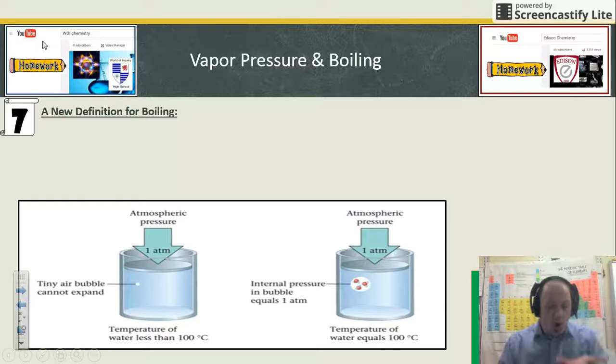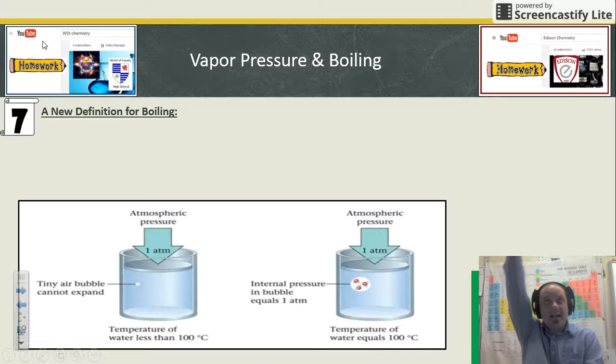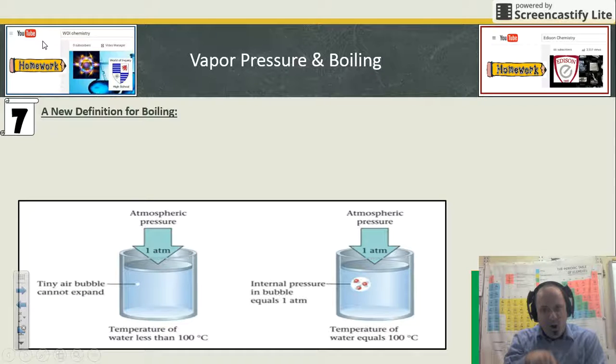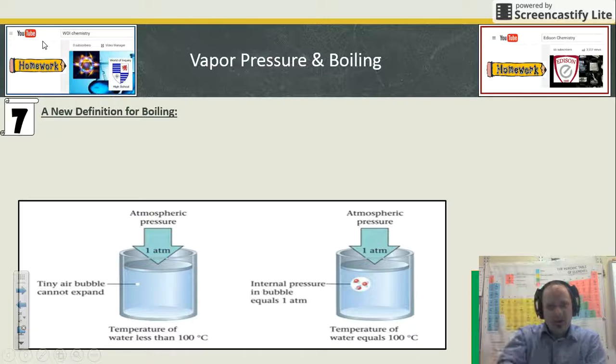That pressure has an effect on molecules and their ability to boil. When a liquid wants to boil, it's trying to turn into a gas, but it's got to push against all this gas that's already sitting on top of it. If the pressure on top of it is greater, it's going to affect how well that liquid can boil pushing back up.